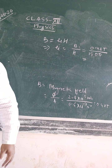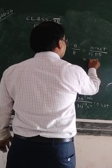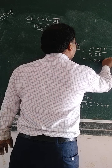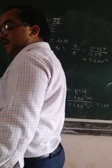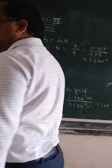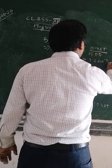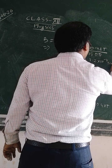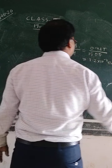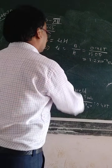The permeability comes out to be 3.2 into 10 to the power minus 4 Tesla meter, with units of Tesla meter to the power minus 1, that is the permeability of the material.